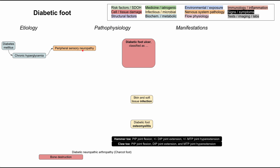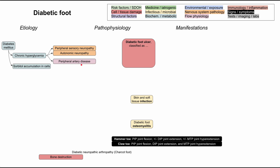Chronic hyperglycemia can affect your nerves, so you can have a peripheral sensory neuropathy as well as an autonomic neuropathy. In addition, it can also predispose you to peripheral artery disease. It's been shown that chronic hyperglycemia predisposes you to atherosclerosis, which in the heart can cause heart attacks, in the brain can cause strokes, but in the limbs can cause peripheral artery disease — and that's what's relevant when talking about the diabetic foot.